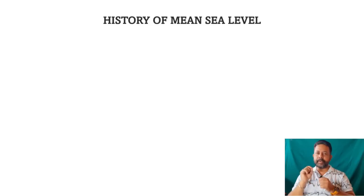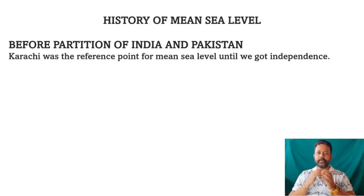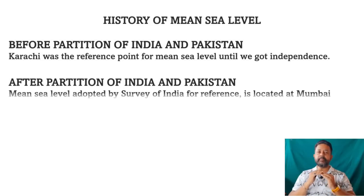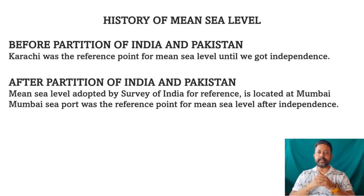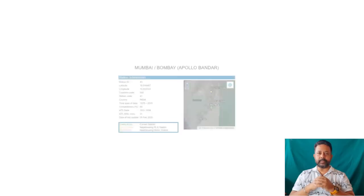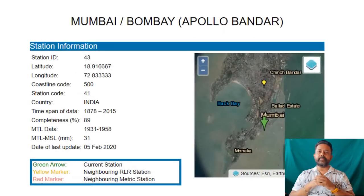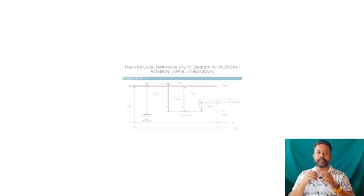During the British Raj, the benchmark at Karachi port was used to determine the mean sea level across the India. Now after independence, that benchmark value has been shifted from Karachi port to Mumbai port or more precisely at Apollo Bandar. So all the mean sea level value in India, either it is in railway station or the hill station, is with reference to the long forgotten benchmark in Mumbai port.